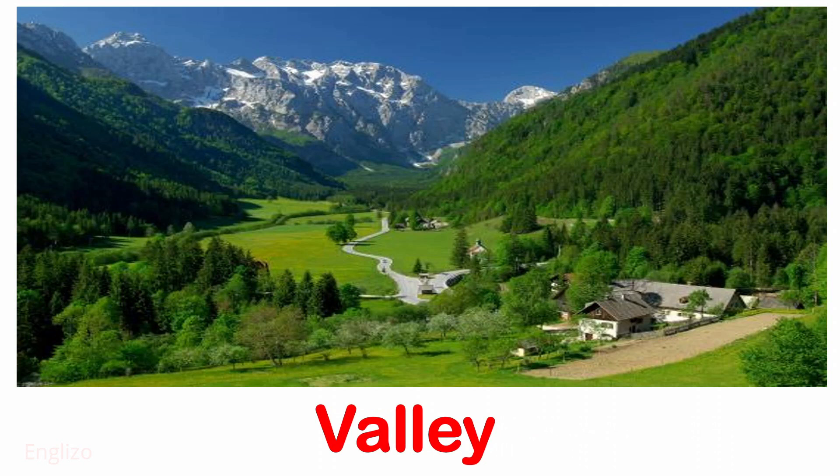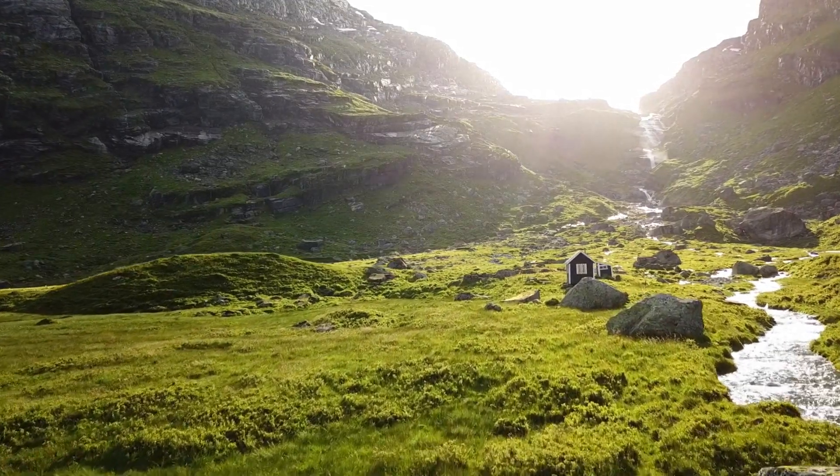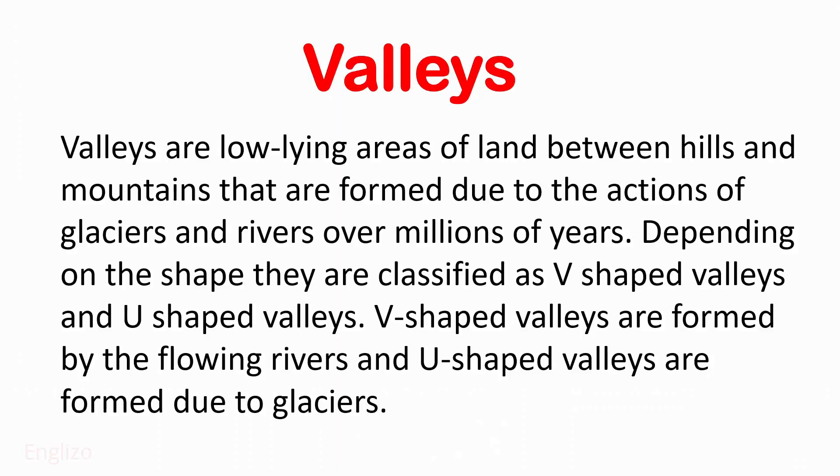Next is Valley. Valleys are low-lying areas of land between hills and mountains that are formed due to the actions of glaciers and rivers over millions of years. Depending on the shape, they are classified as V-shaped valleys and U-shaped valleys. V-shaped valleys are formed by flowing rivers and U-shaped valleys are formed due to glaciers.